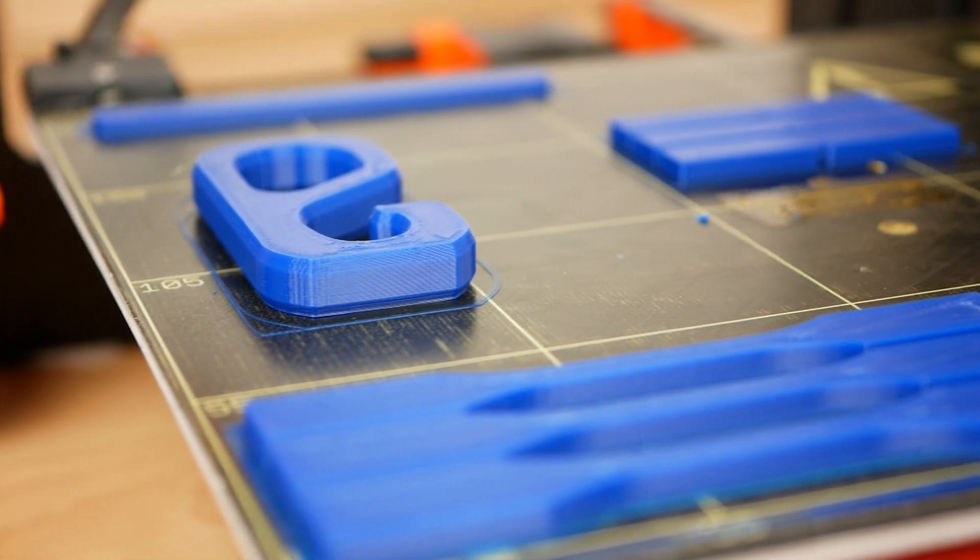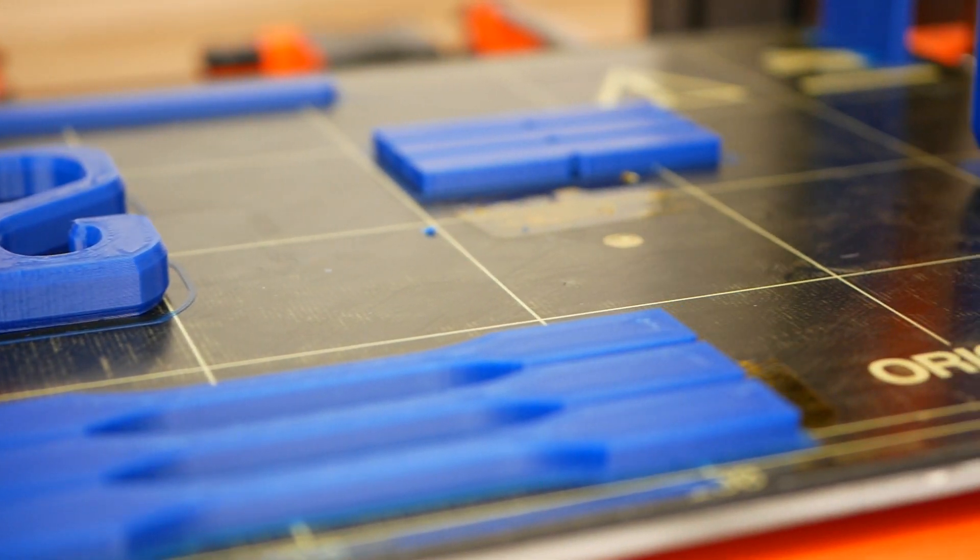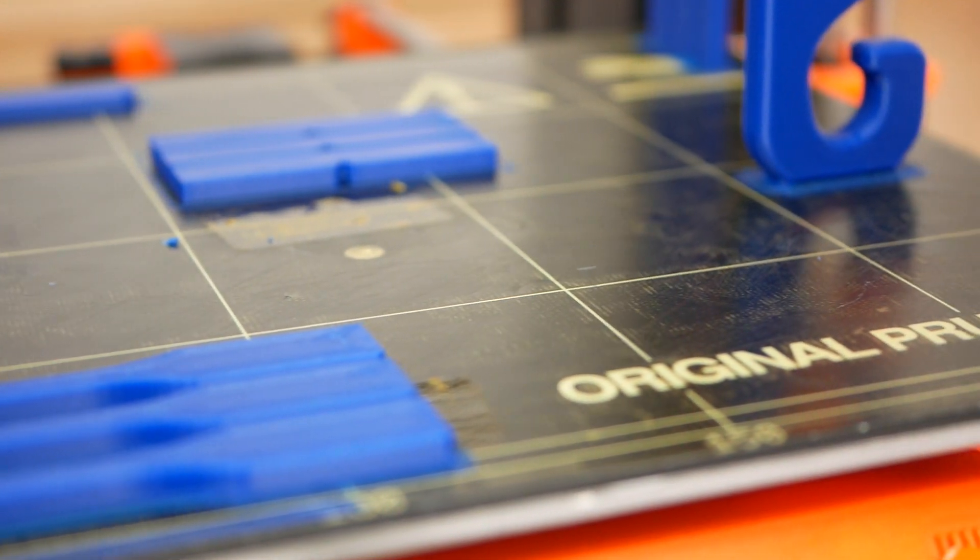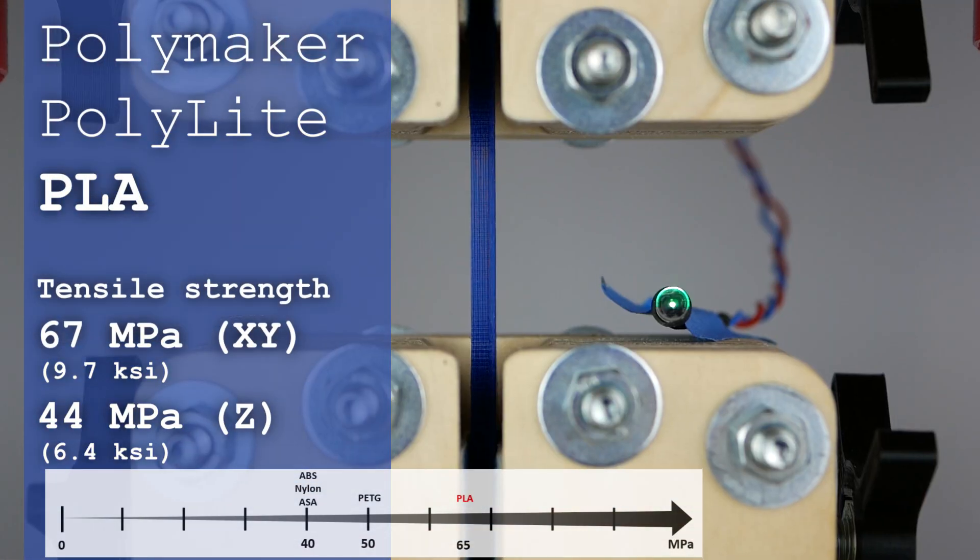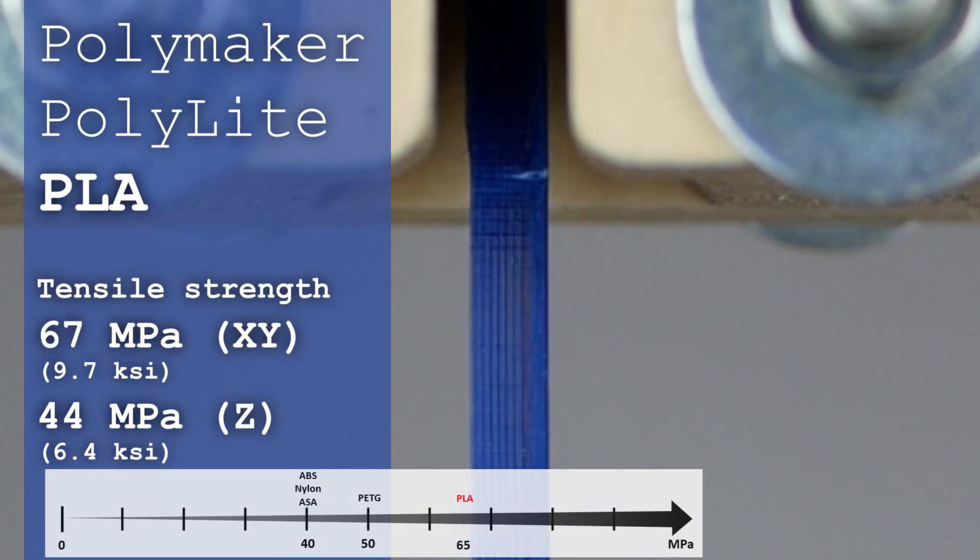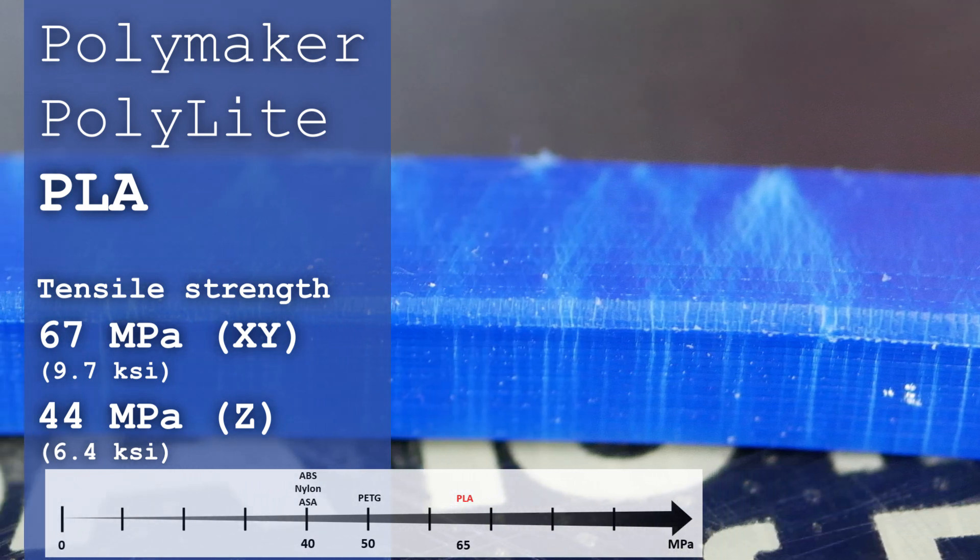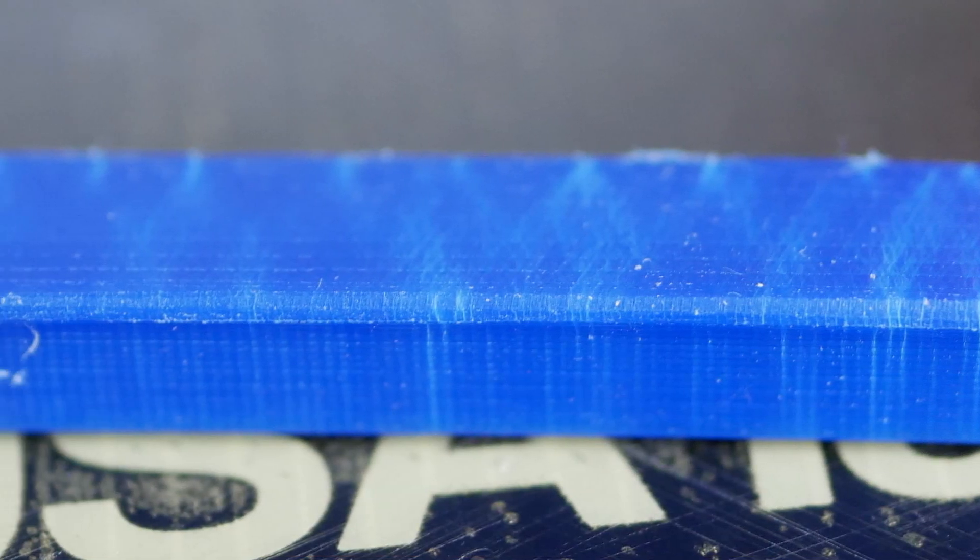Let's go to the interesting part, the mechanical tests. With a tensile strength of 67 MPa, the material is quite strong but still maintains some ductility, which can nicely be seen at the white marks on the samples. It doesn't feel as brittle as some other brands.